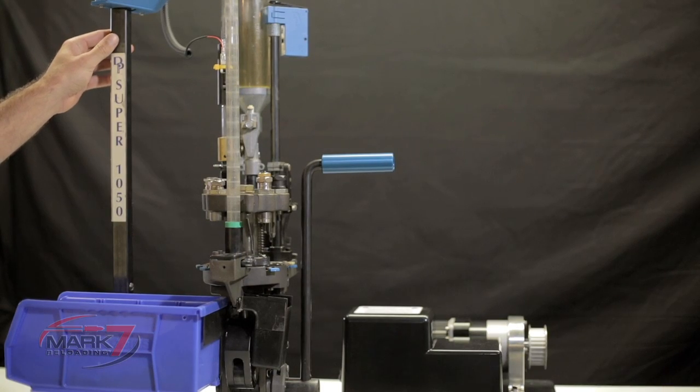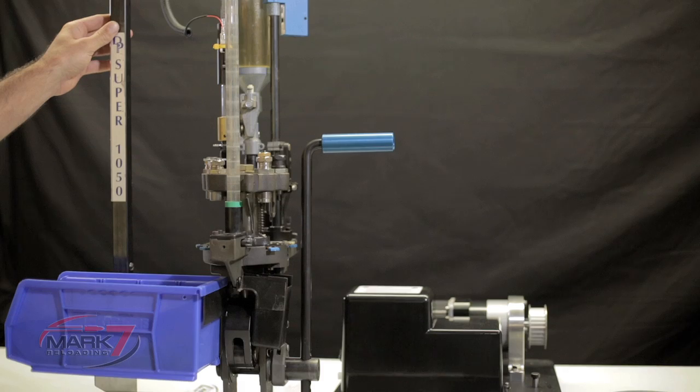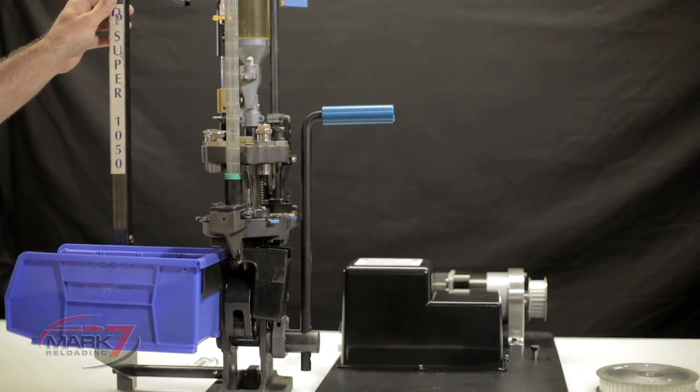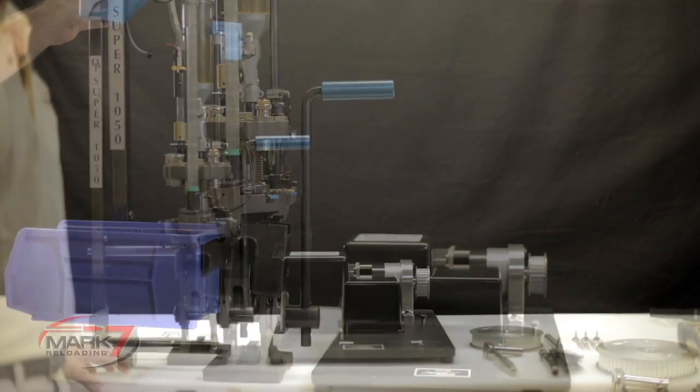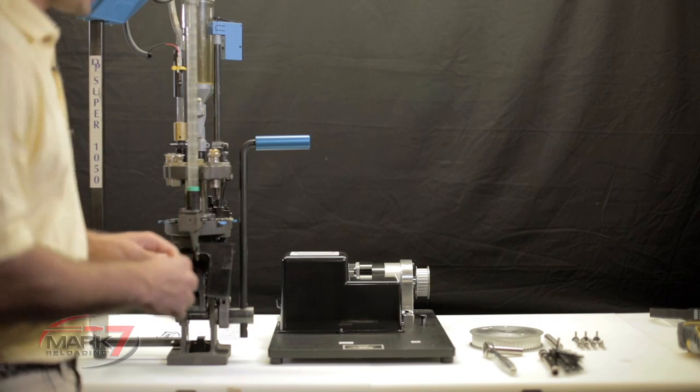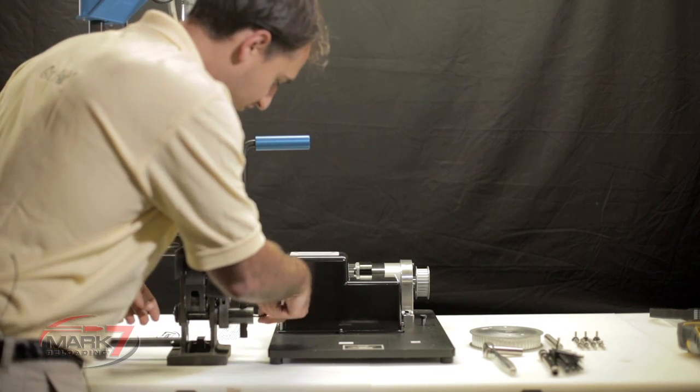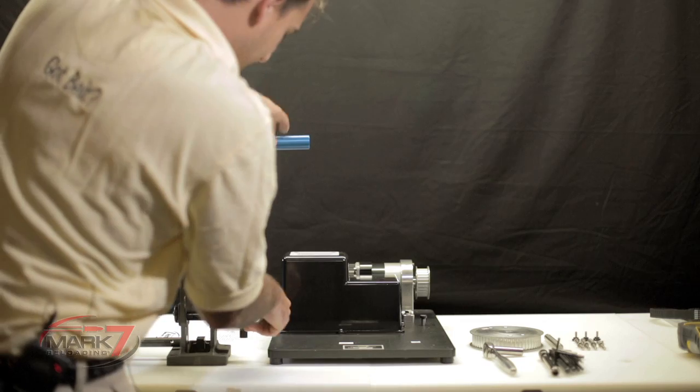Before you install the Dillon 1050 to the Mark 7 Autodrive, make sure that the Dillon 1050 is in full working order. First step with a 3/16ths Allen key, remove the set screw and the Dillon 1050 input shaft.